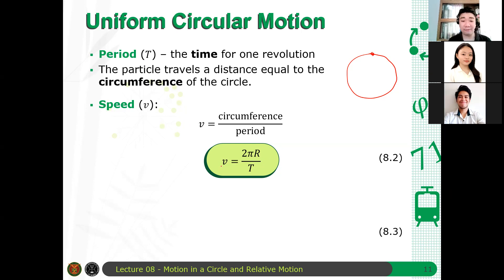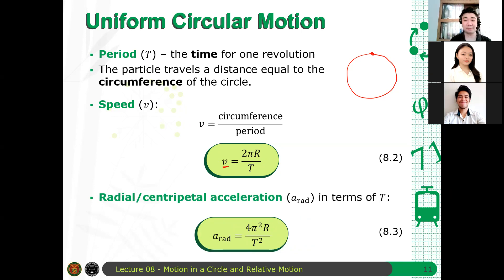And hence, if V is given by this, I can always determine my centripetal acceleration in terms of period which is given by the following. A is 4 pi squared r over T squared. Questions? May tanong ba rito? May tanong?